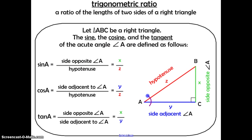We're going to use angle A as a reference point. As you can see, we've labeled this as the side that is opposite from angle A. This is the side that's opposite from the right angle, which we always call the hypotenuse. This side is called the side adjacent to angle A, because it's not the one that's opposite and it's not the hypotenuse — it's next to angle A. The sine of angle A equals the ratio of the side opposite from angle A over the hypotenuse — that's side X over side Z.